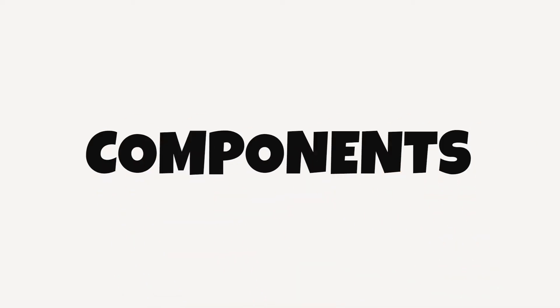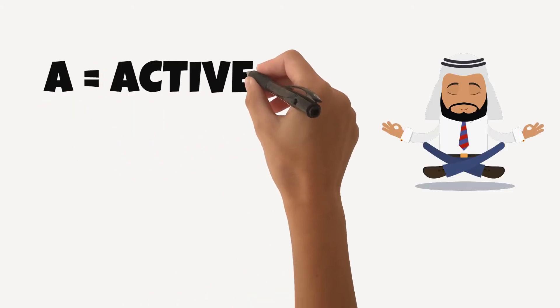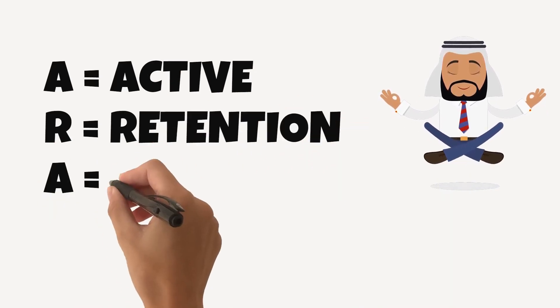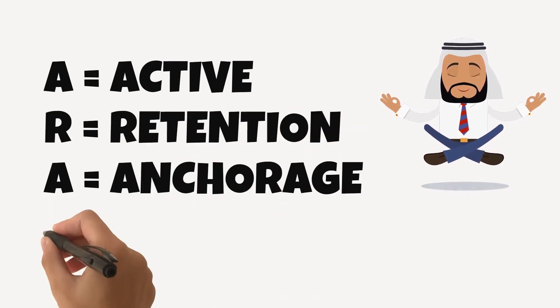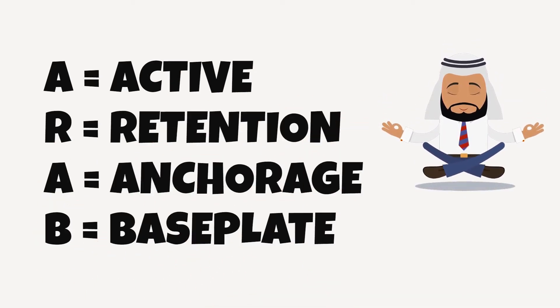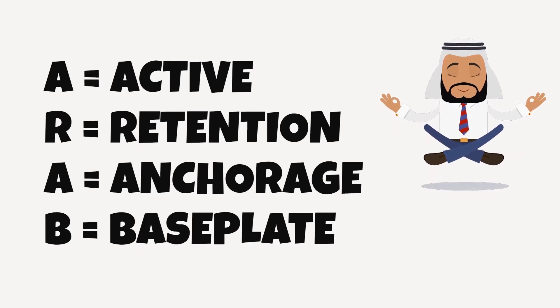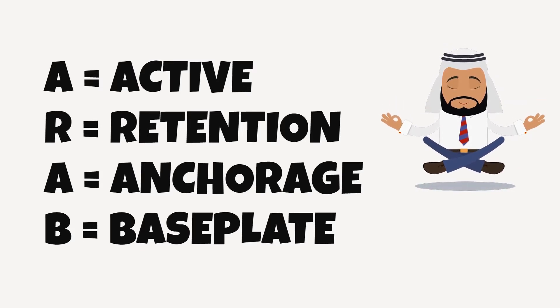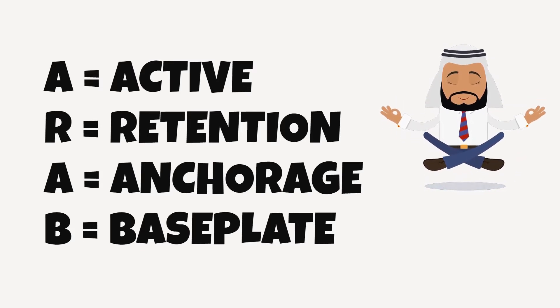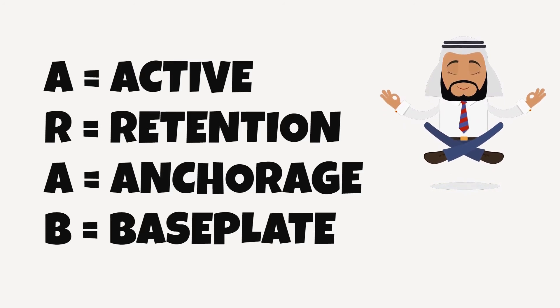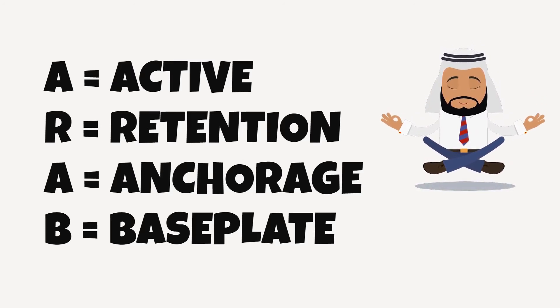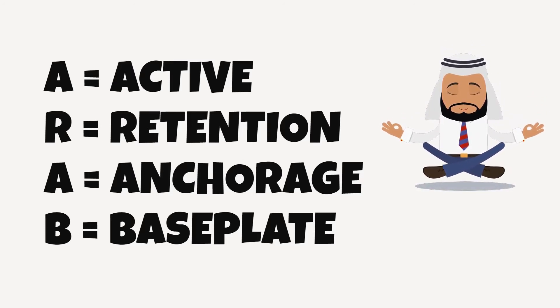So what are the components that make a removable appliance? If you remember the mnemonic ARAB: where A equals the active components, R equals the retentive components, A equals anchorage, and the final B is the base plate. I'm going to be looking into each of these in much more detail.